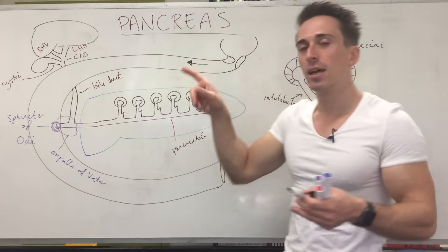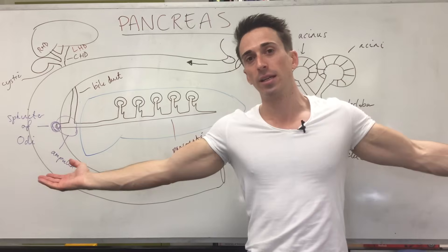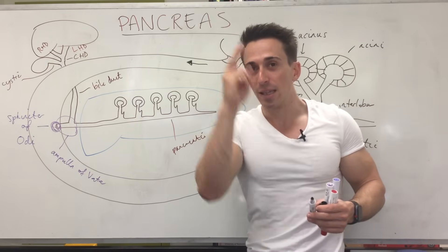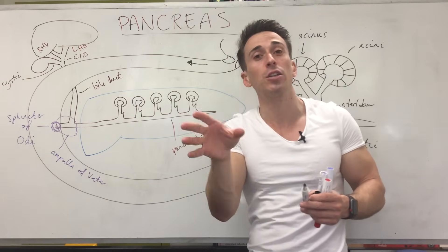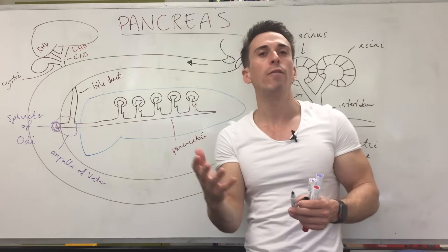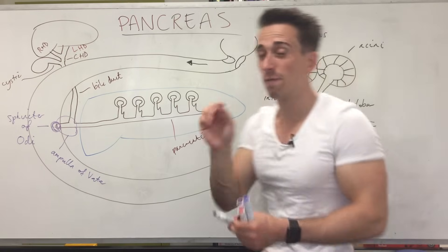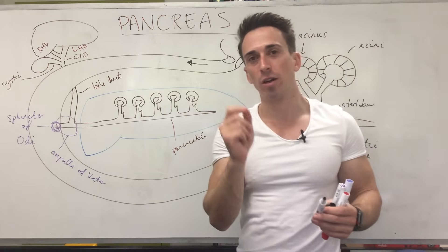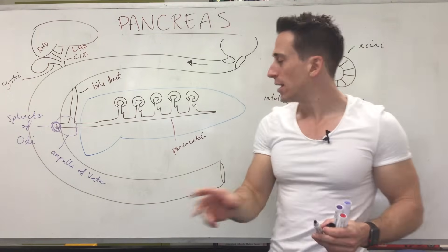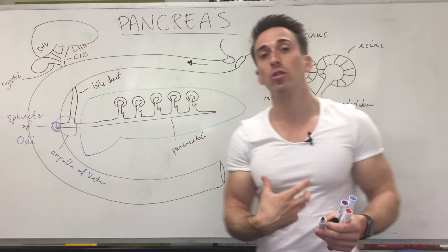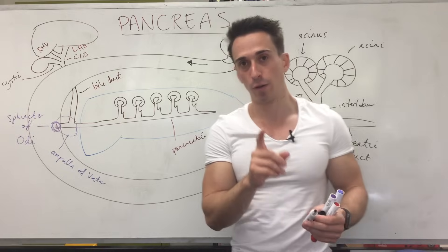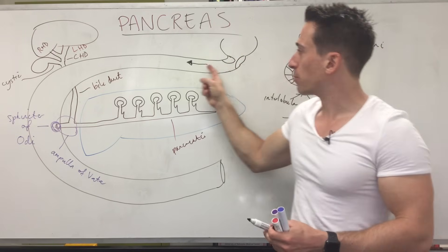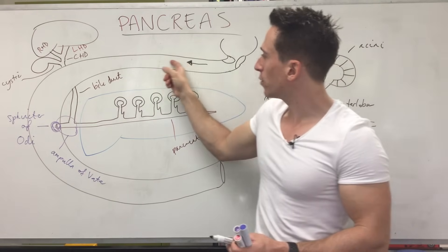In the mouth, amylase secreted by the parotid gland breaks carbohydrates down to sugars. In the stomach, hydrochloric acid denatures proteins and proteases act as molecular scissors to cut up proteins. So by the time food reaches the duodenum, carbs and proteins are partially digested — but fats have not been digested yet. This is a very important point: without the pancreas, 60% of the fats in your food would not get absorbed.